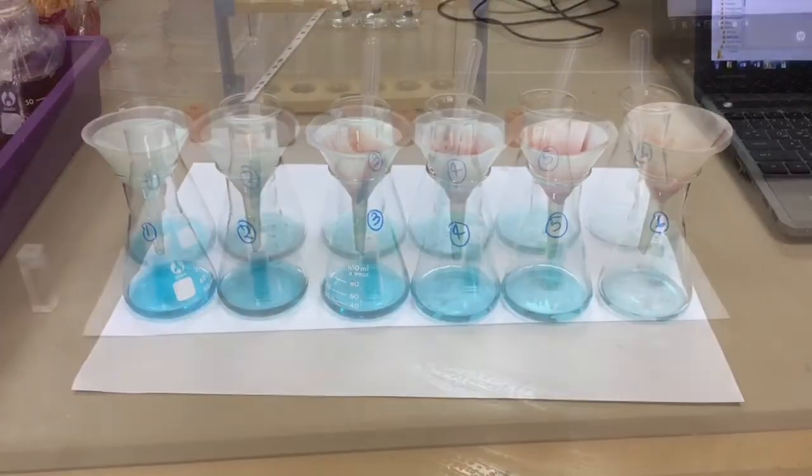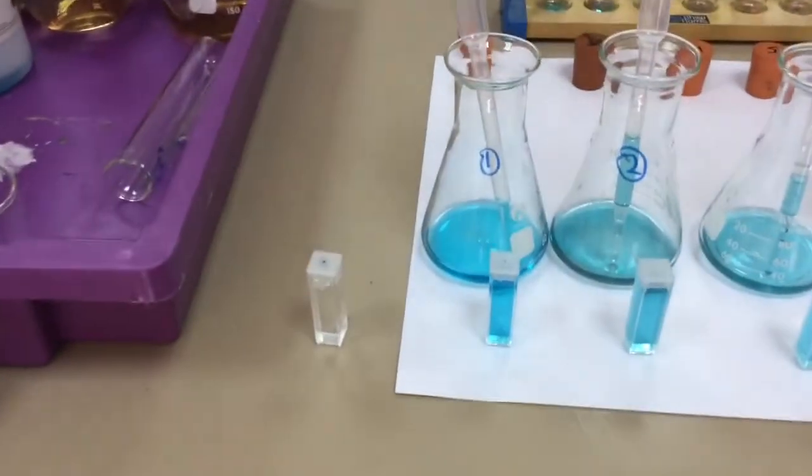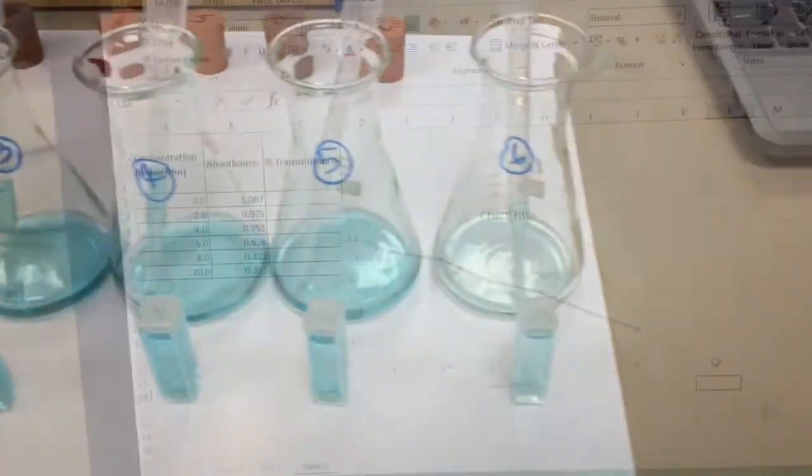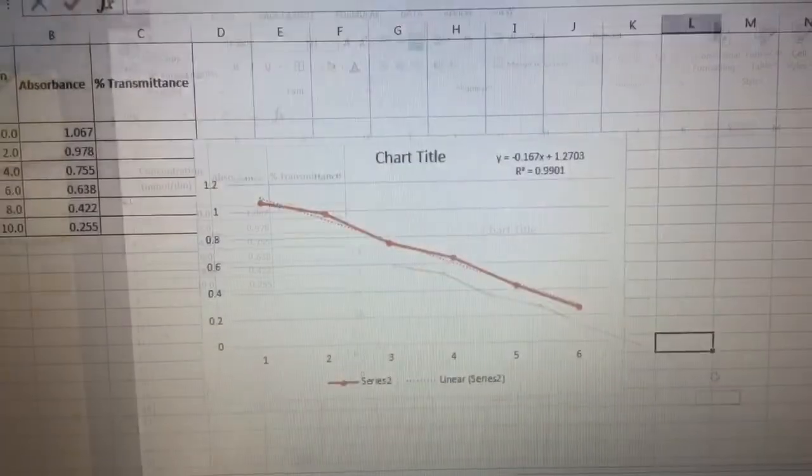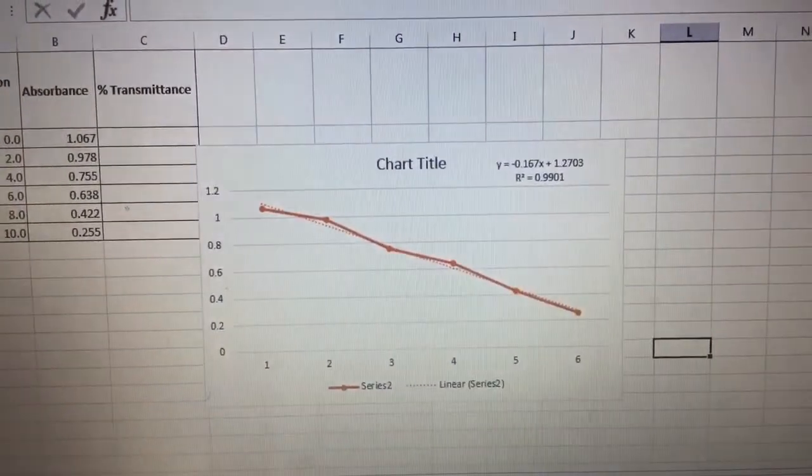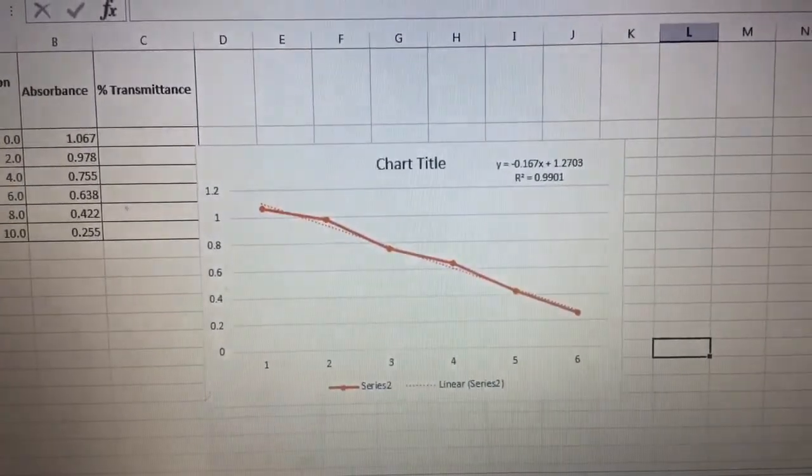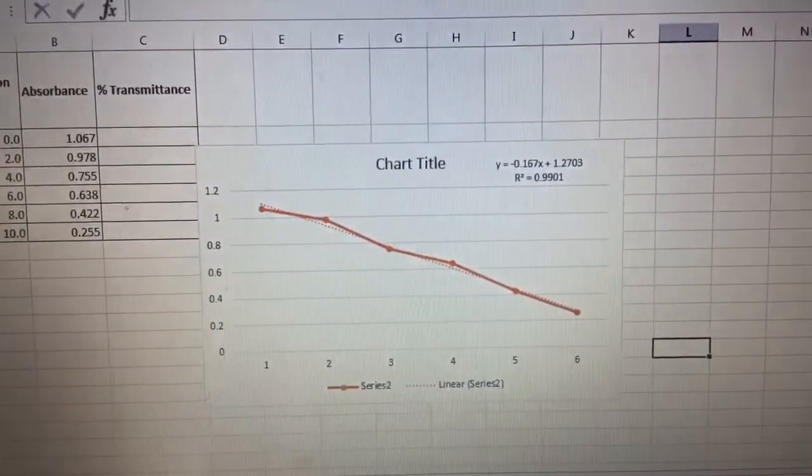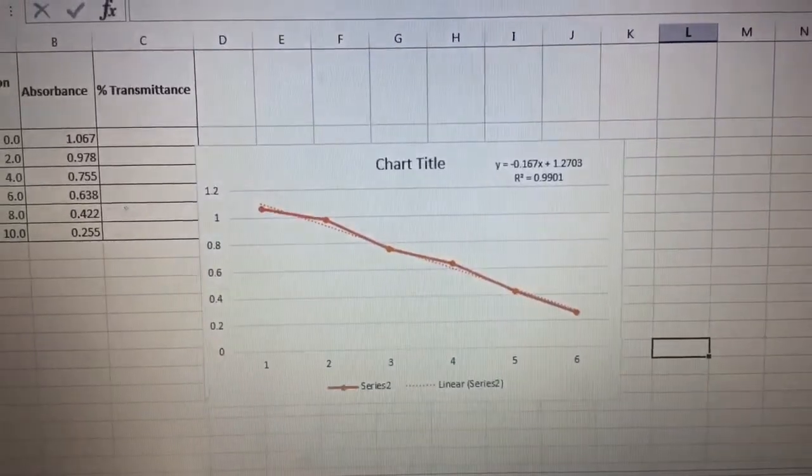We're now going to measure the absorbance in the colourimeter. I've decanted into cuvettes, calibrated with some distilled water, and here is my graph. Applying the line of best fit you can see that the r squared is 0.99 which is a really great rating for that line. An r squared of 1 representing a perfectly straight line of course.